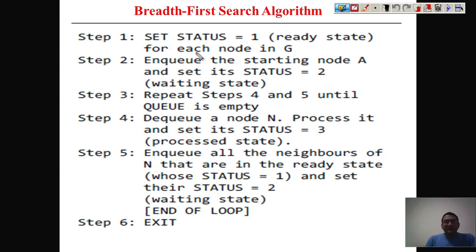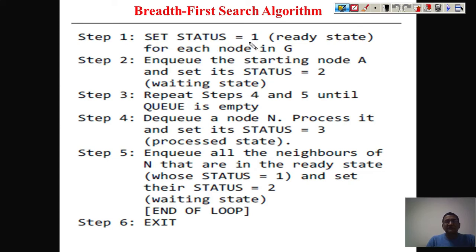Before we take an example, let us go to the formal algorithm. This algorithm consists of six steps. Step one: set status equals to one for every node — initially when you start working with any graph, all nodes are ready to be processed. Step two: enqueue the starting node A and set its status to two. We start with the root or starting vertex, and setting status to two means it is now inserted into the queue and in the waiting state.